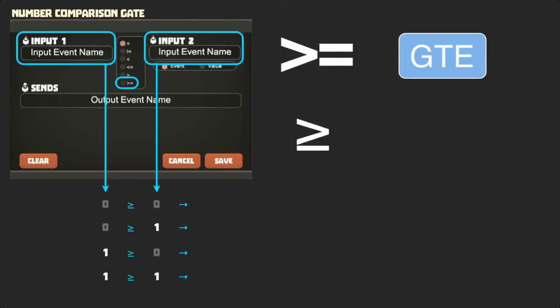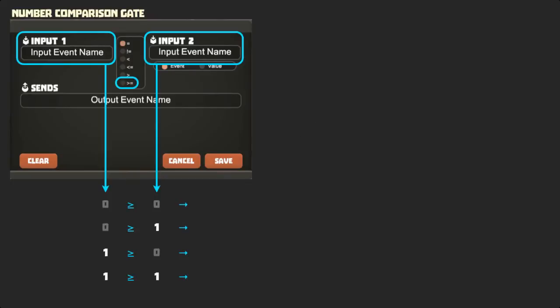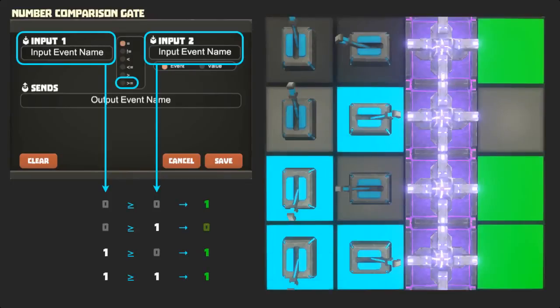Just as less than or equals is an inverse of greater than, the greater than or equals comparator is an inverse of the less than comparator, so that all results are true except for the second one.